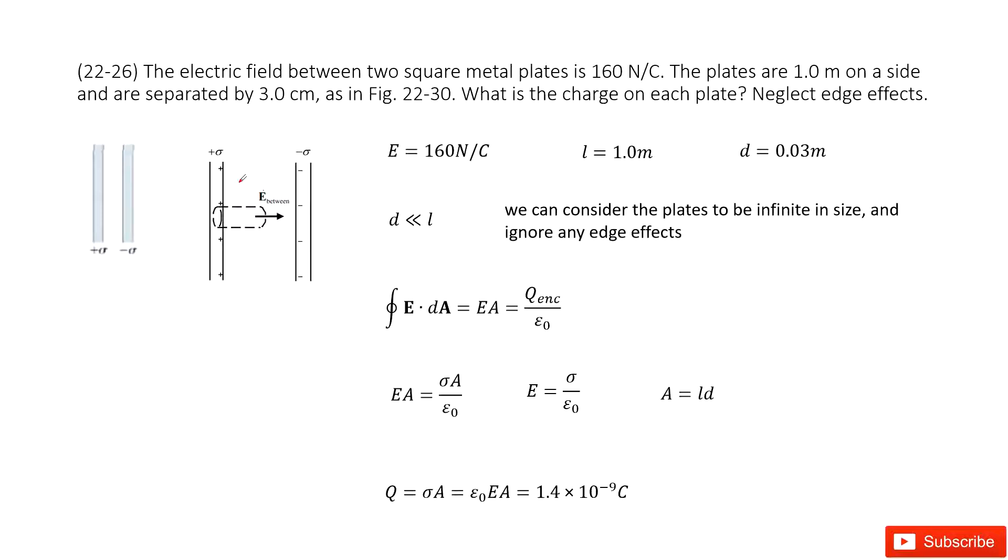Let's look at problem 26 in chapter 22. Chapter 22 is Gauss's law. We can see, we know the electric field length between two square metal planes is 160 newtons per coulomb.